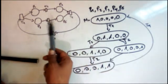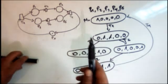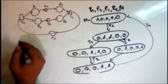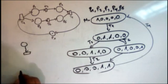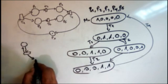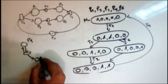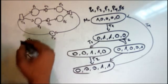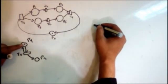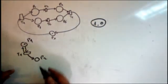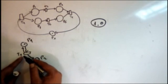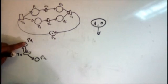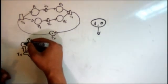So that is our coverability graph for this Petri net. Now let me add another Petri net example. This second net has p1, p2, and transition T1, with one token initially in p1. The initial marking is one for p1 and zero for p2. The only fireable transition is T1. When I fire T1, I remove the token from p1 and add one token to p1 and one to p2.